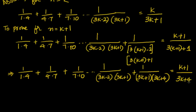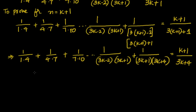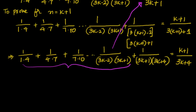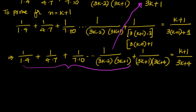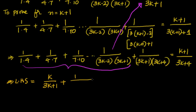Taking the LHS, we need to prove it equals the RHS. Since we assumed the sum of k terms equals k/(3k+1), we can directly write LHS as k/(3k+1) plus the (k+1)th term, which is 1/(3k+1)(3k+4).